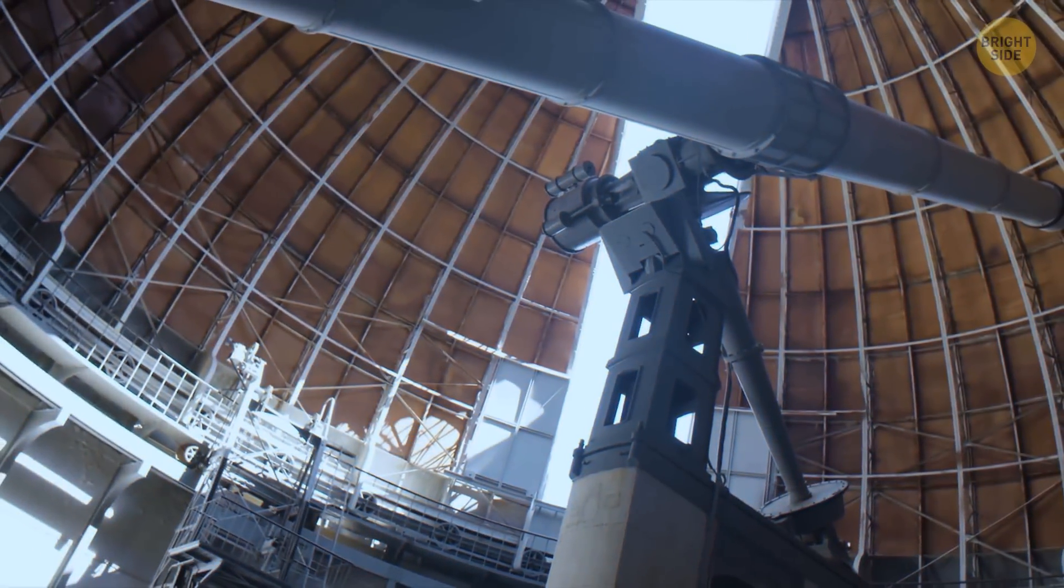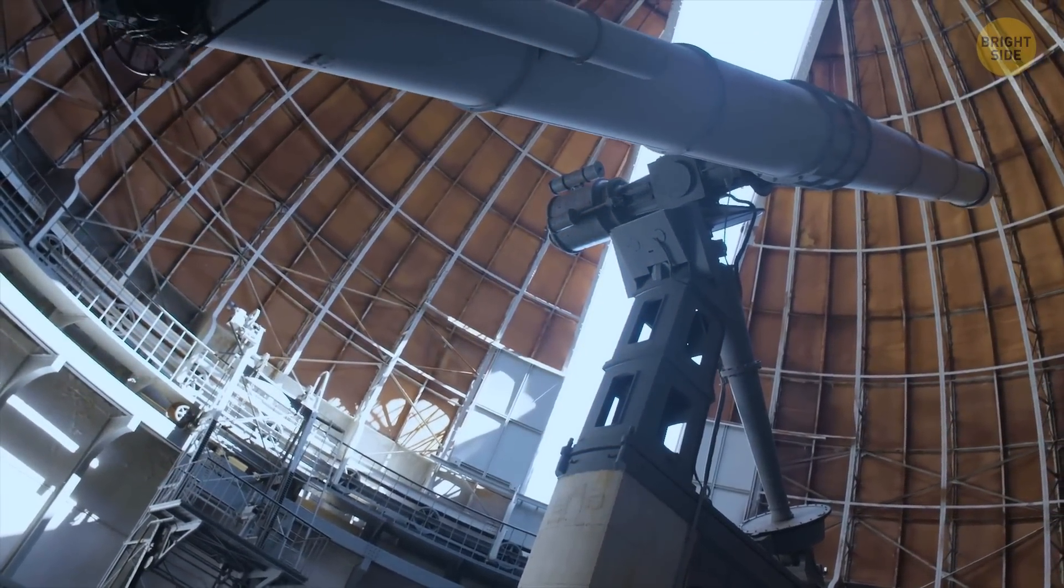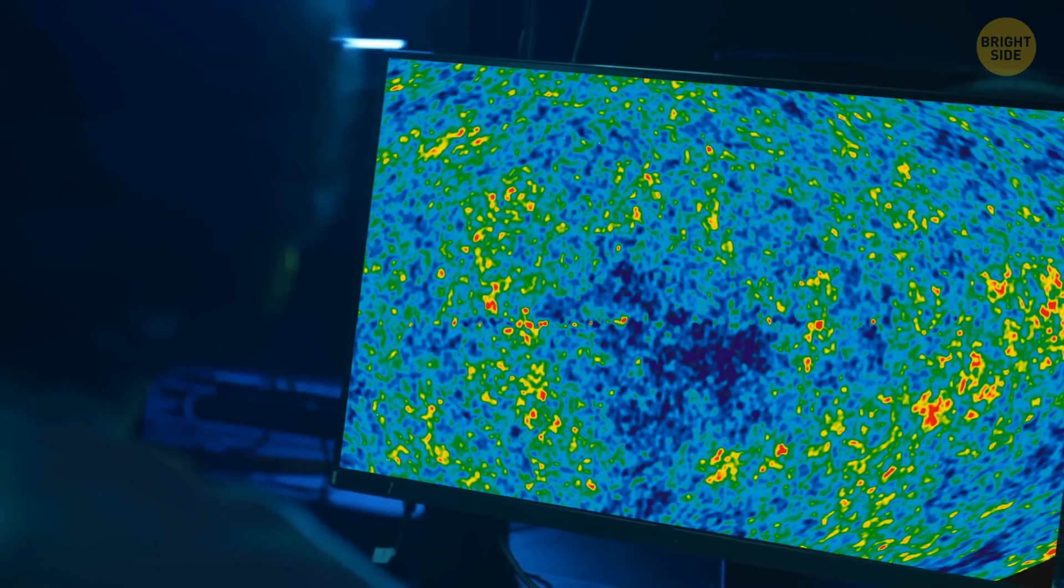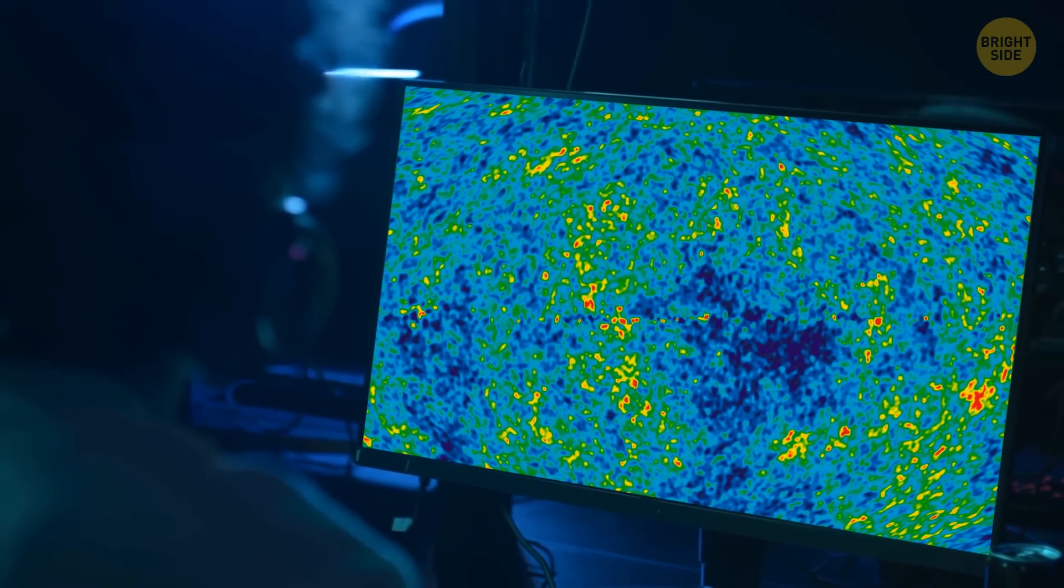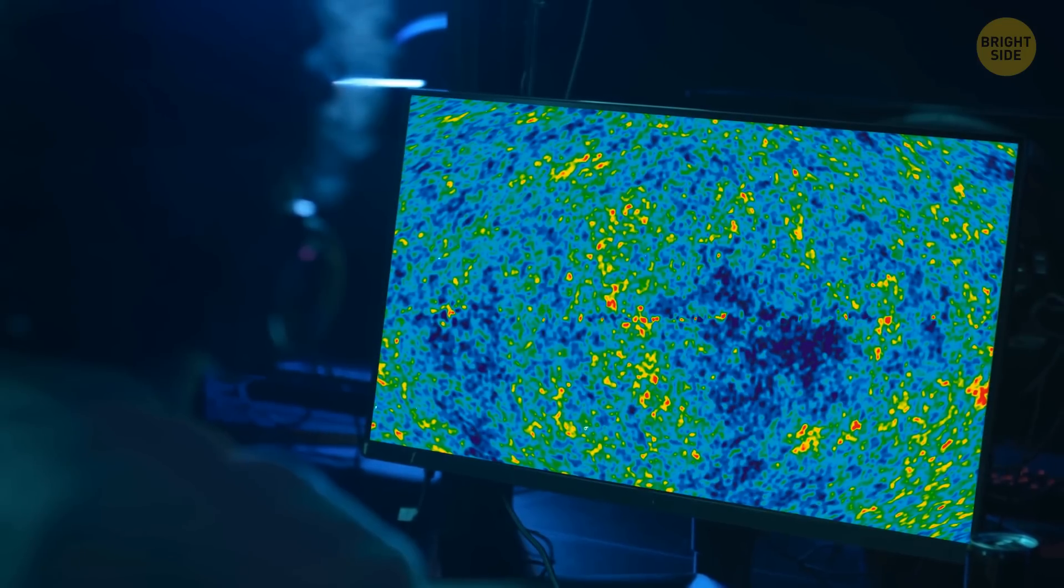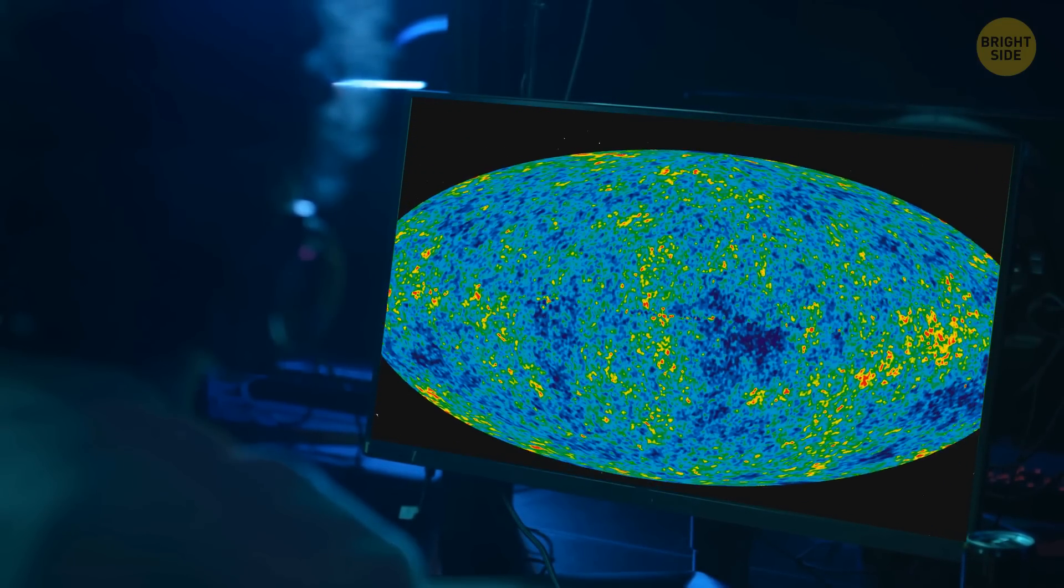Alright, so people learned that they were surrounded by electromagnetic radiation. Then, they started collecting more data about it. They accumulated more and more info over the years until they made this very map. This is a map of CMB temperatures. But while creating it, scientists discovered something unusual.